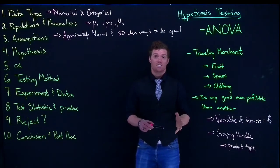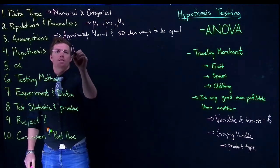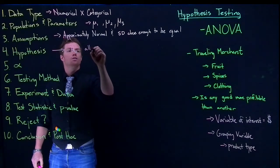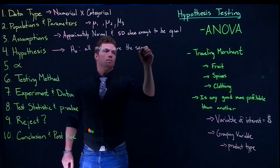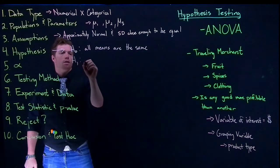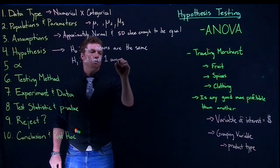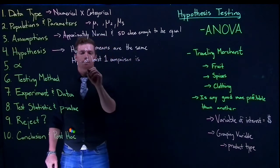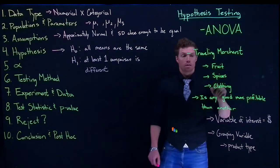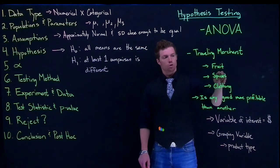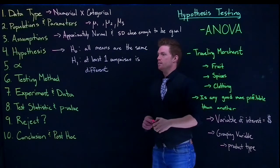Once we get to that point, we're ready to make our hypothesis. The null hypothesis is that all means are the same. The alternative is that at least one comparison is different. It doesn't mean that all of these means are different from one another — it's that when we compare fruit to spices, or fruit to clothing, or spices to clothing, one of those pairwise comparisons is different from the other.